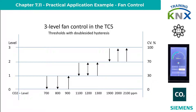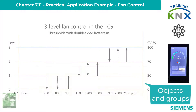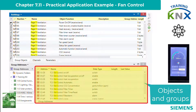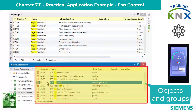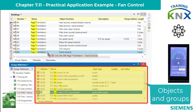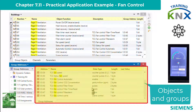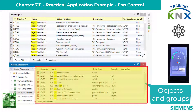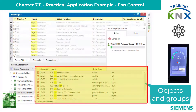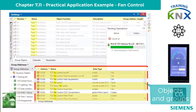After commissioning, I will show this in the group monitor. Now I link the objects again with the already prepared group addresses. Similar to the temperature controller, there are only two indispensable objects: fan speed (200) and CO2 concentration (204). So that I can demonstrate the controller better, I connect all other objects with group addresses as well. Finally, the download.